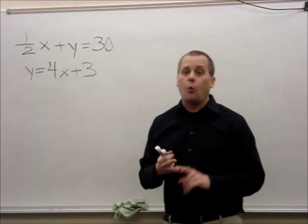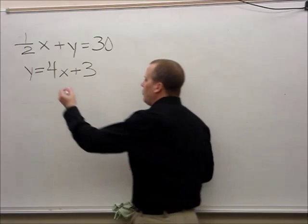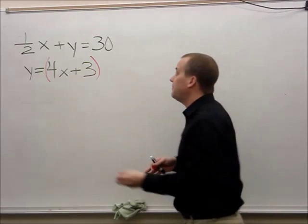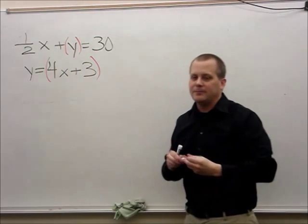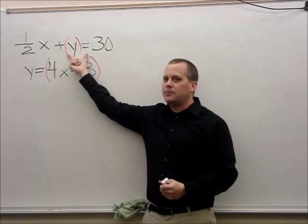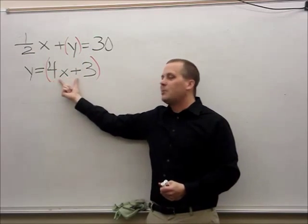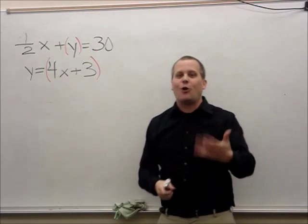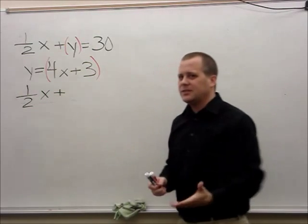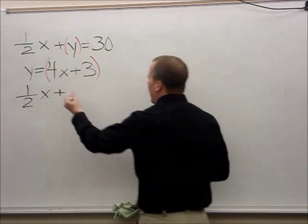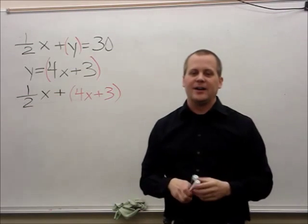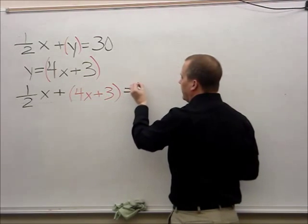In my second equation, y equals 4x plus 3, so I'll put parentheses around that because that's what y represents. Now I go back to my first equation and put parentheses around y. Going back to my restaurant example, this is like the ranch dressing replacing the barbecue sauce. When I rewrite this, I have one-half x plus, then I take the y out and replace it with 4x plus 3, which is what y equals.